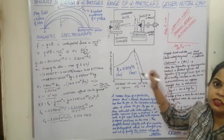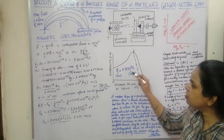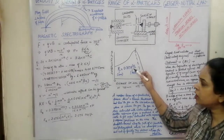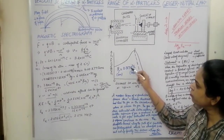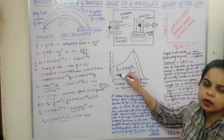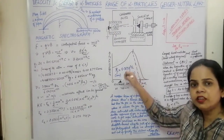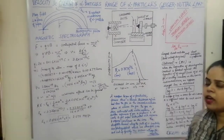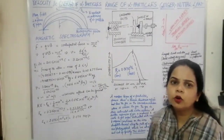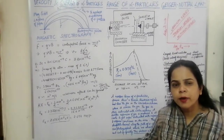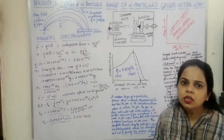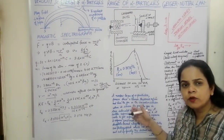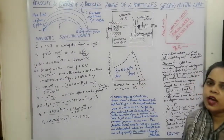From the range, we can also calculate the energy using the formula: range (in cm) is directly proportional to E^(3/2). So knowing the energy gives the range, and knowing the range gives the energy. We thus have two methods: the magnetic spectrograph (velocity → KE) or the ionization chamber (range → energy via the formula).